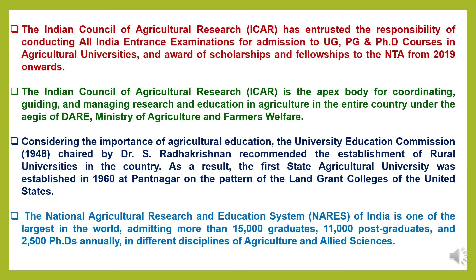ICAR is the apex body for coordinating, guiding, and managing research and education in agriculture in the entire country under the aegis of the Ministry of Agriculture and Farmers Welfare. Considering the importance of agriculture education, the University Education Commission established in 1948 and chaired by Dr. S. Radhakrishnan recommended the establishment of rural universities. As a result, the first state agriculture university was established in 1960 at Pantnagar in Uttarakhand, on the pattern of the land grant colleges of the United States. The national agricultural research and educational system of India admits more than 15,000 graduates, 11,000 postgraduates, and 2,500 PhD students annually in different disciplines of agriculture and allied sciences.